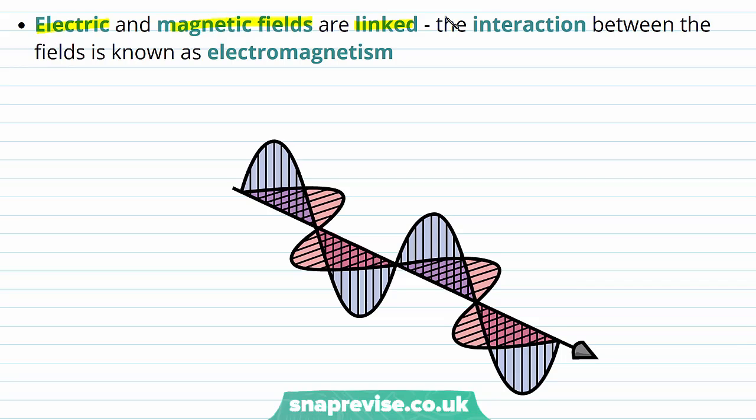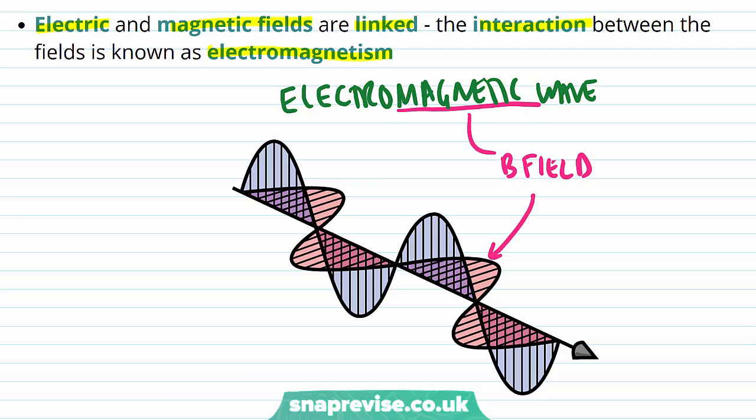Electric and magnetic fields are linked. The interaction between the fields is known as electromagnetism. Here we have an electromagnetic wave, and it's made up of both a magnetic field and an electric field.